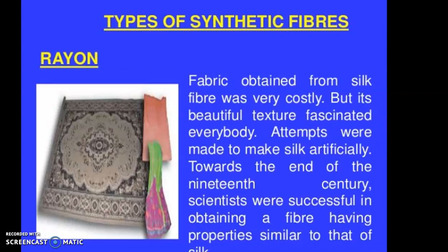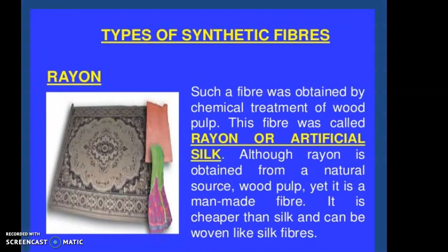Rayon is cheaper than silk, has a beautiful texture, and many people are fascinated by it. It was made as an artificial alternative to expensive silk. Towards the end of the 19th century, scientists successfully obtained a fiber with properties similar to silk through chemical treatment of wood pulp. Although rayon is obtained from a natural source — wood pulp — it is still classified as a man-made fiber.